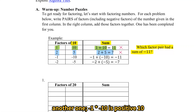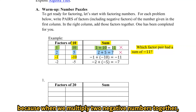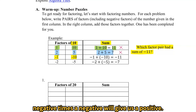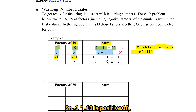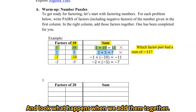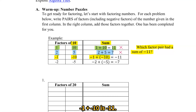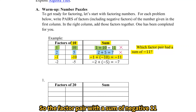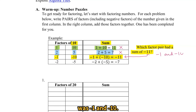So we try another one. Negative 1 times negative 10 is positive 10, because when we multiply two negative numbers together, a negative times a negative gives us a positive. So negative 1 times negative 10 is positive 10. And look what happens when we add them together: negative 1 plus negative 10 is negative 11. So the factor pair with a sum of negative 11 was negative 1 and negative 10.